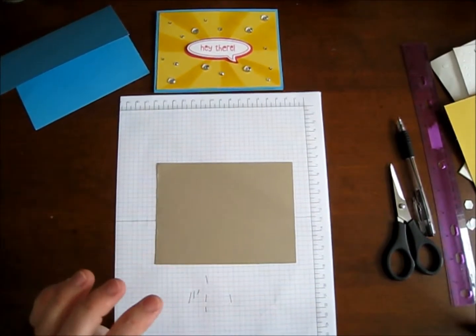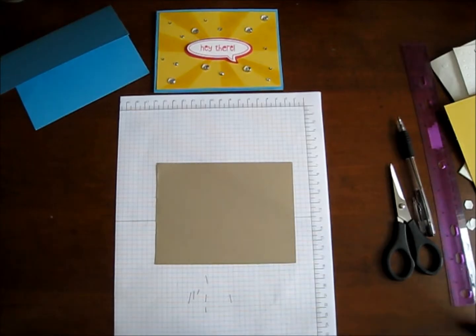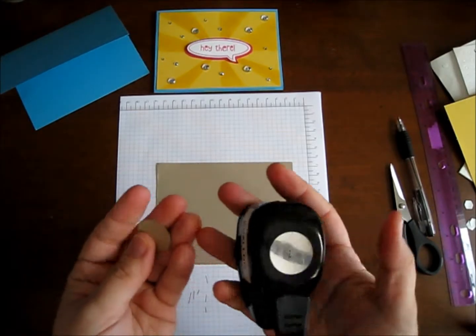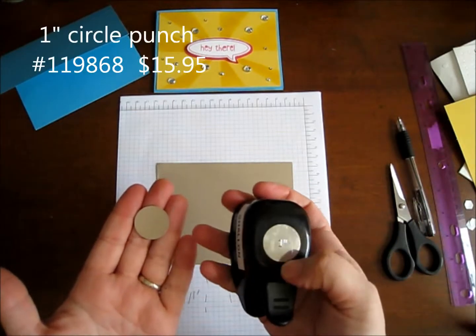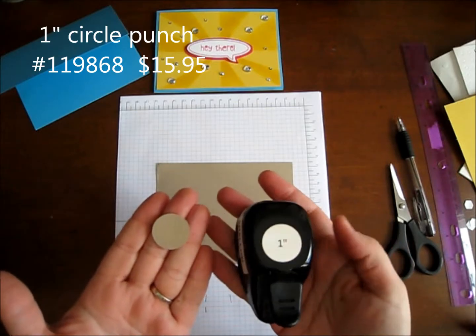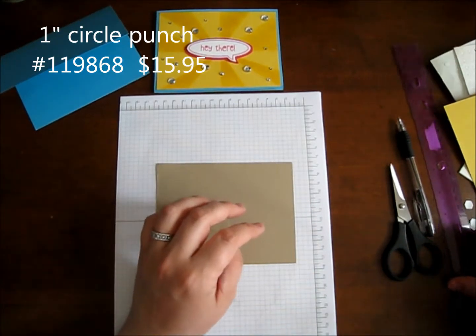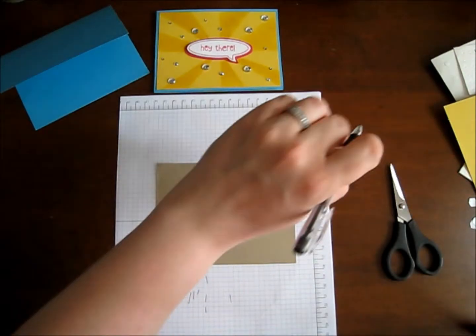This one is our crumb cake color, but it doesn't have to be any particular color. You're also going to need a circle and this is the smallest circle punch that I have, which is one inch. So I punched out a circle out of our crumb cake as well. And I'm going to need a ruler and a pen.